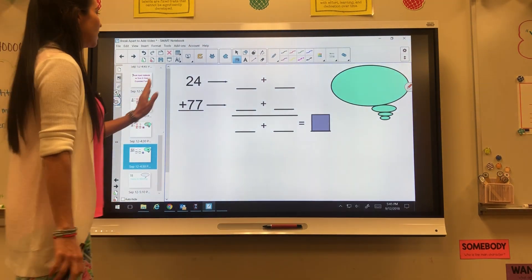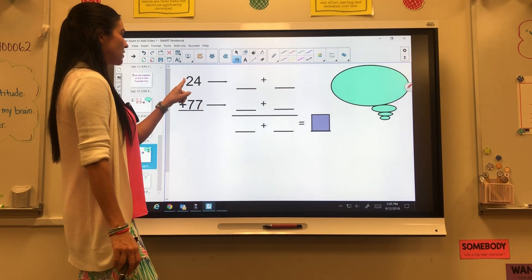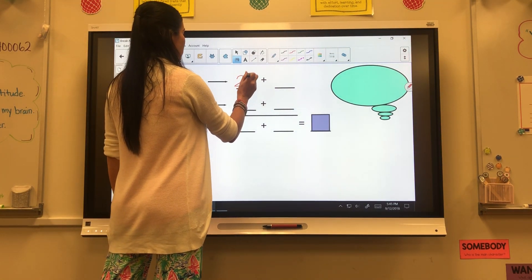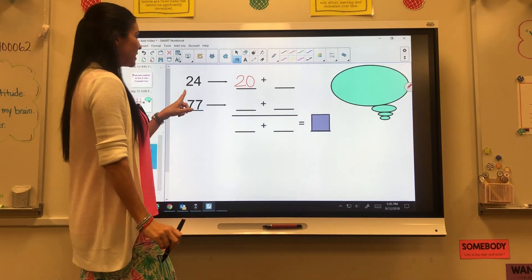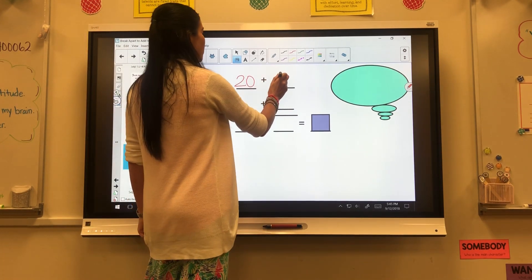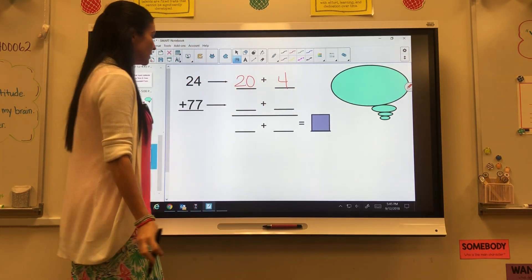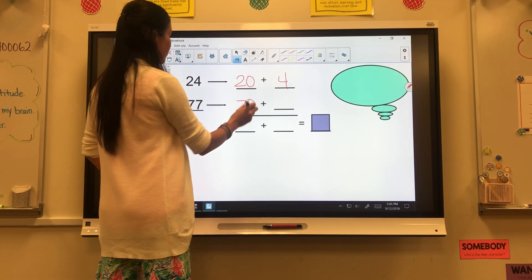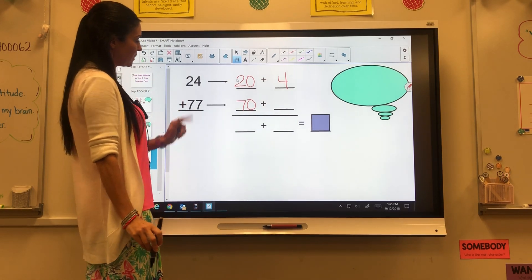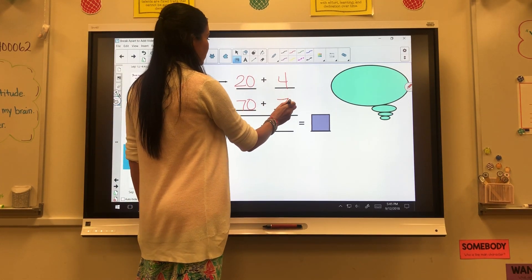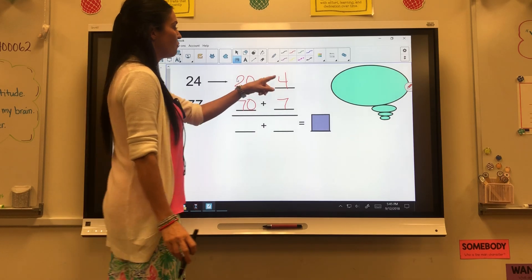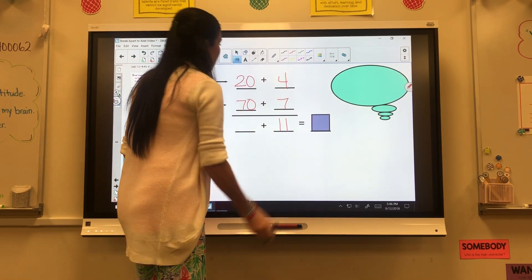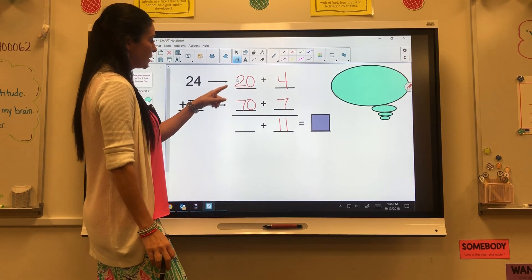Last one. We're going to do the same way. We're going to look at our tens and ones, and we're going to break it apart. The value of my 2 is 20 because it's in the tens place. The value of my 4 is still 4 because it's in the ones place. On the bottom, the value of my first 7 is 70 because it's in the tens place, and the value of my second 7 is going to be 7 because it's in the ones place. 4 plus 7 is 11, and then 20 plus 70.